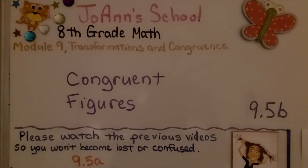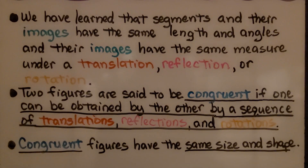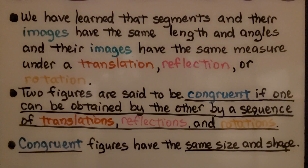Lesson 9.5b: Congruent Figures. We have learned that segments and their images have the same length, and angles and their images have the same measure under a translation, reflection, or rotation. Two figures are said to be congruent if one can be obtained from the other by a sequence of translations, reflections, and rotations. Congruent figures have the same size and shape.